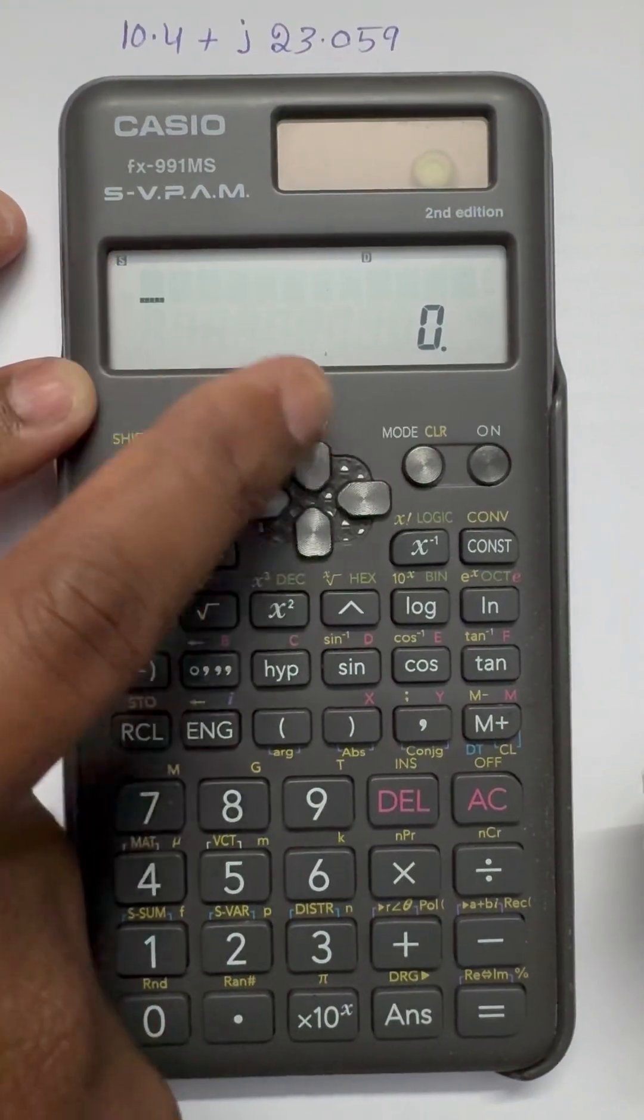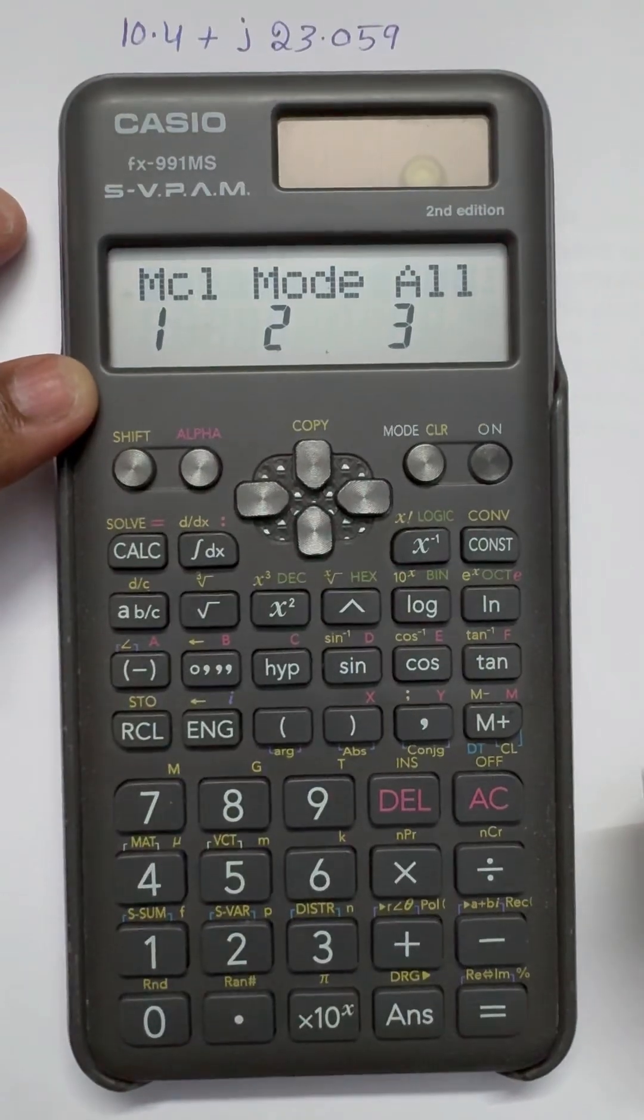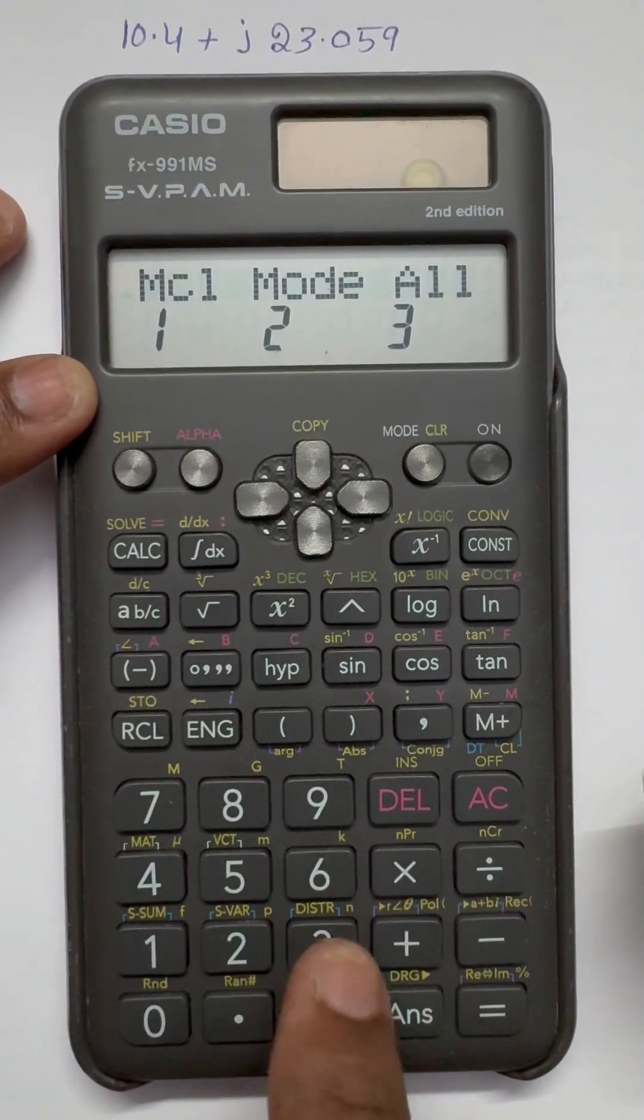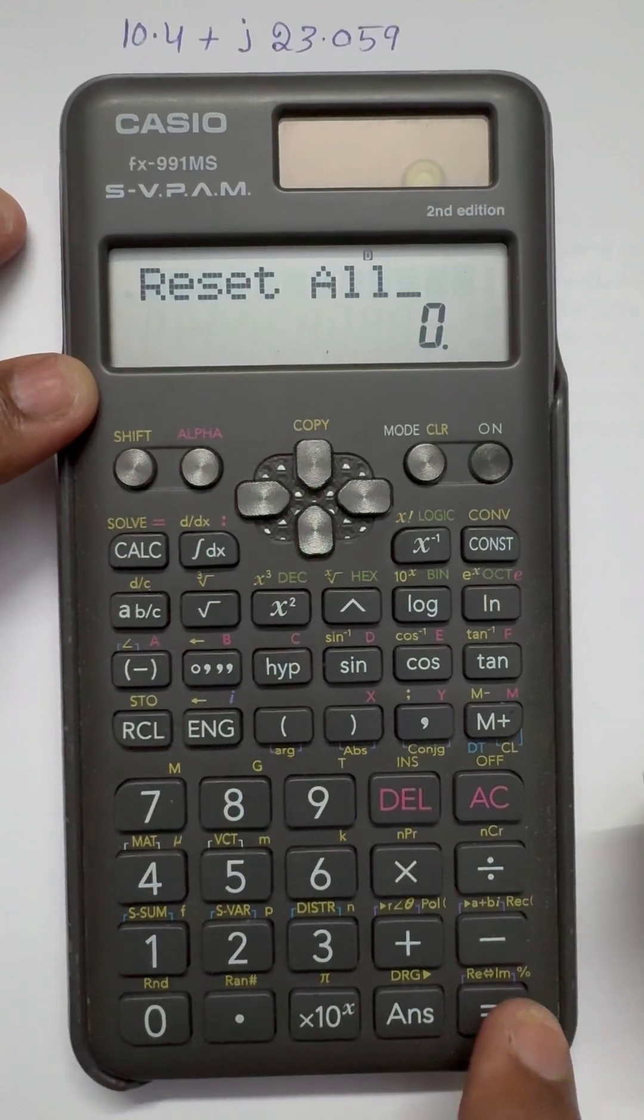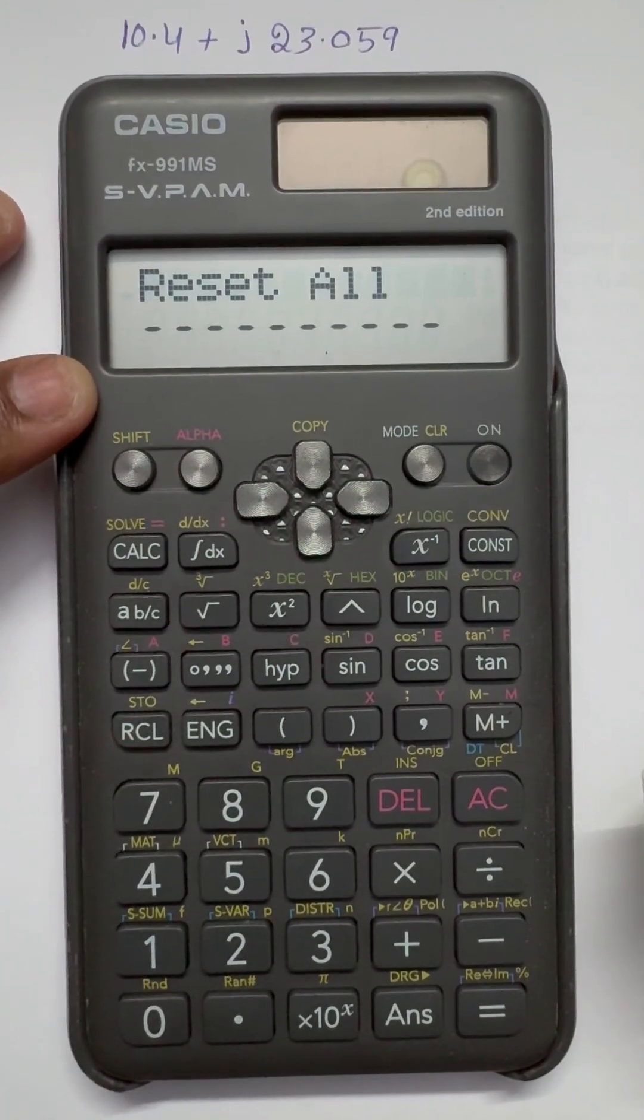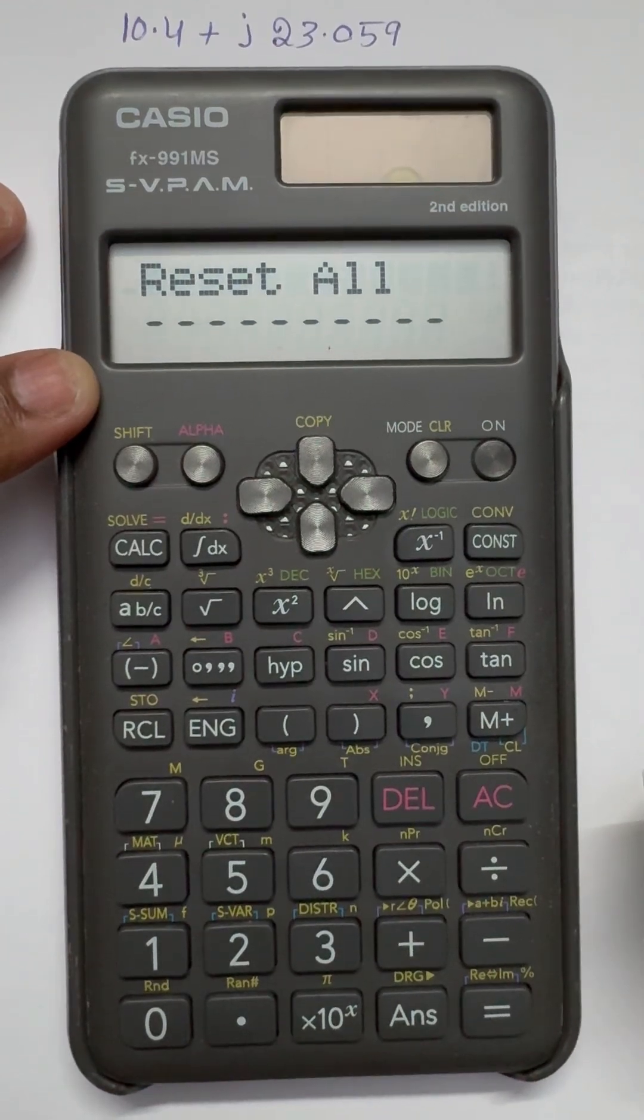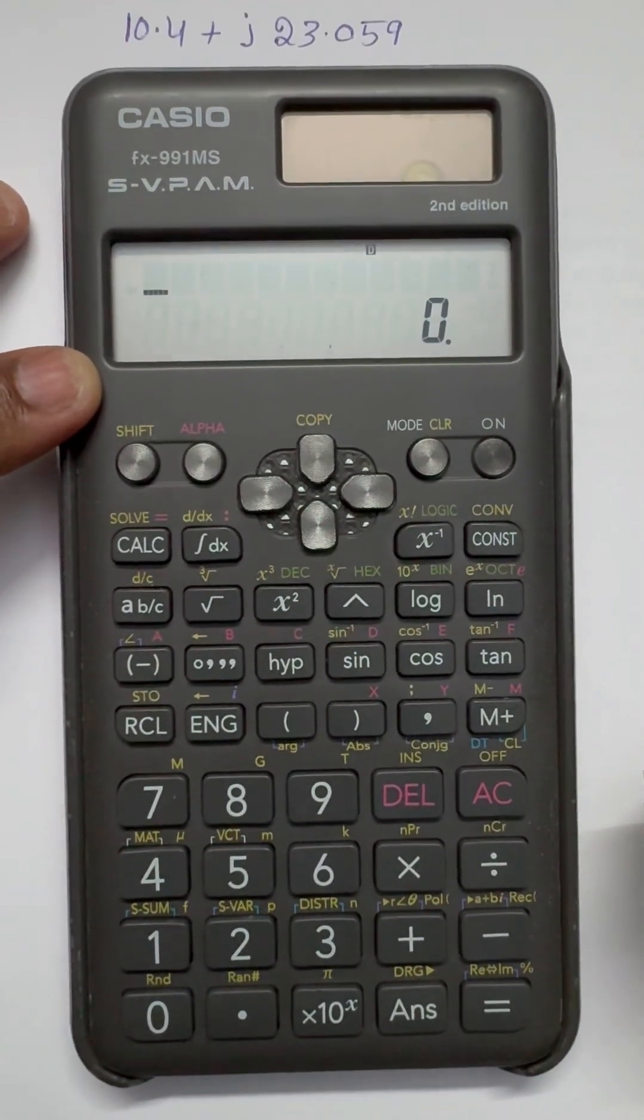Press shift button, then clear. Then press three to clear all three, and then equal to. All settings will be reset.